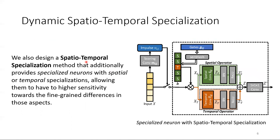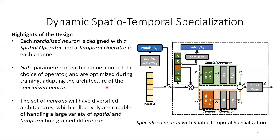We also designed a Spatio-Temporal Specialization method that additionally provides specialised neurons with spatial or temporal specialisations, allowing them to have a higher sensitivity towards fine-grained differences in those aspects. Specifically, each specialised neuron is designed with a spatial operator and a temporal operator in each channel. Gate parameters in each channel control the choice of operator and are optimised during training, thus adapting the architecture of the specialised neuron. The set of neurons will have diversified architectures, which collectively are capable of handling a large variety of spatial and temporal fine-grained differences.